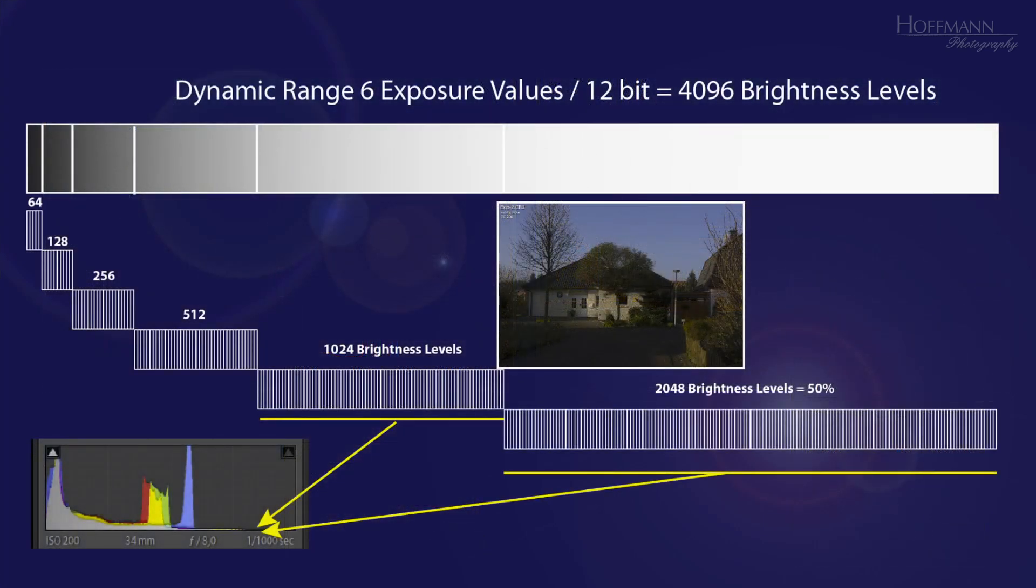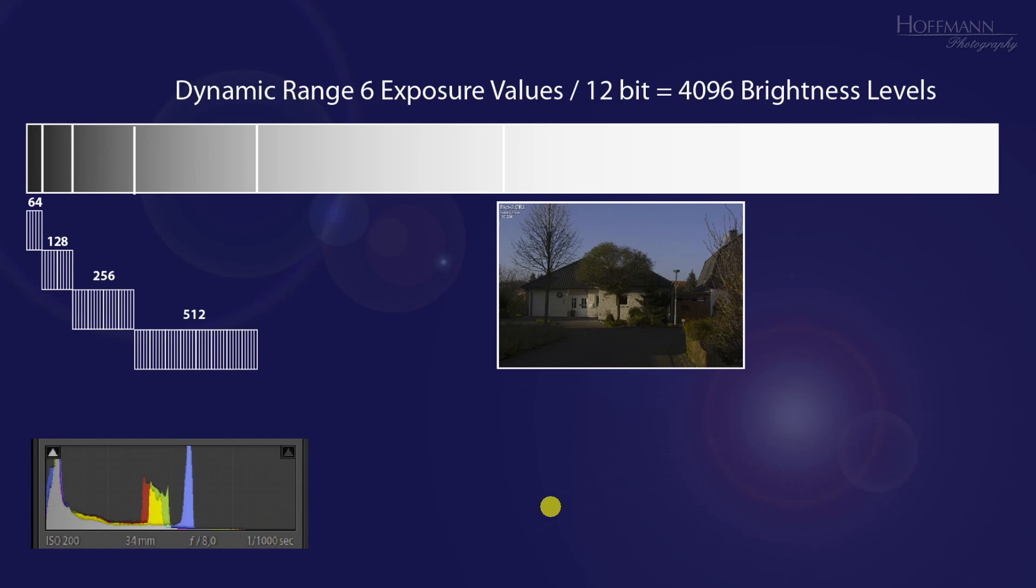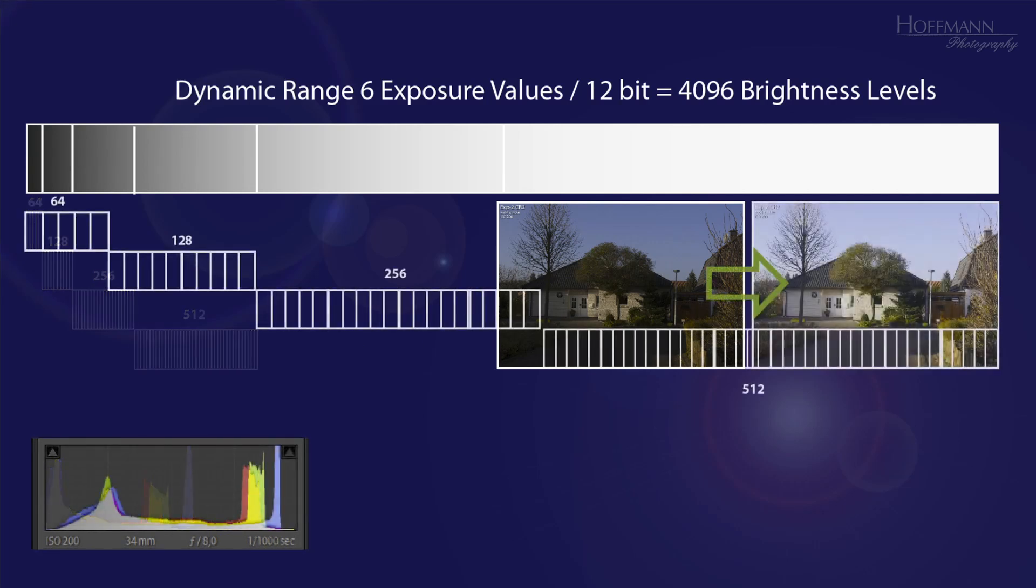Let's assume that due to the short exposure, these two brightness bands are missing. Now we have to stretch the remaining 1000 or so brightness levels to the right, so that the photo looks good. No big deal, you may say.